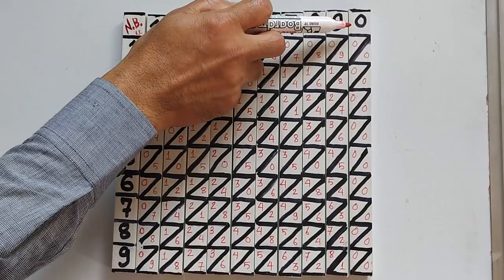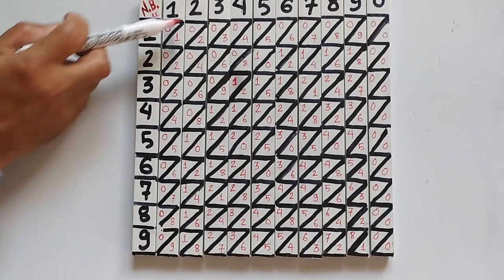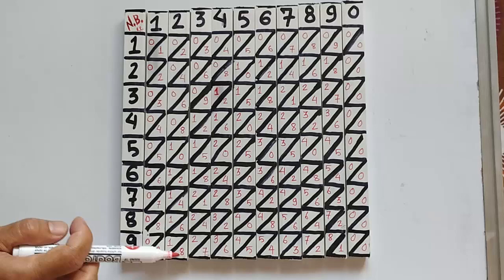1 times 1 is 1, 1 times 2 is 2, 3, 4 and so on. For 2: 2, 4, 6, 8, 10, 12, 14, 16, 18.